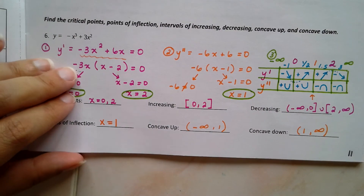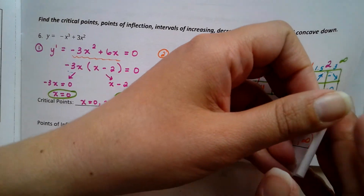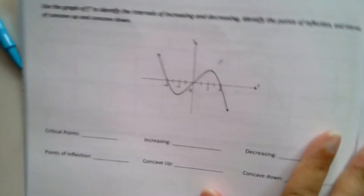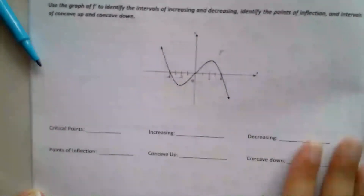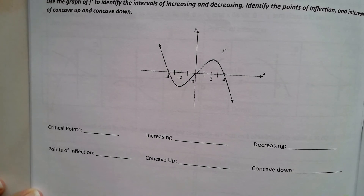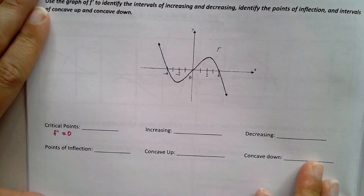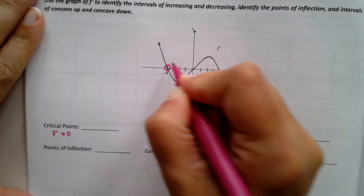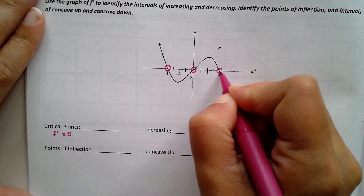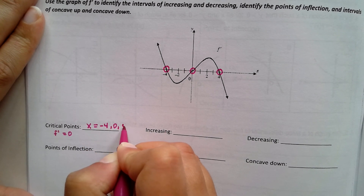Now let's look at how we analyze the same information when given a graph of f prime instead of an equation. The problem says to use the graph of f prime to identify all the same information. For critical points, we're looking for places where f prime equals zero — in other words, the x-intercepts of the graph. So the critical points are x equals negative four, zero, and four.